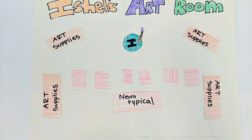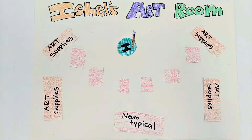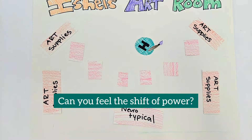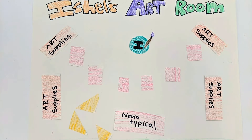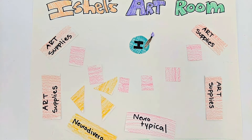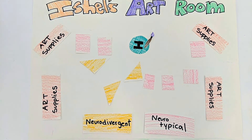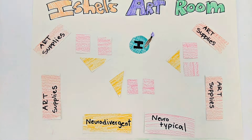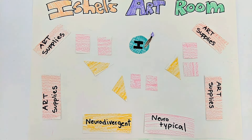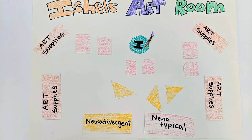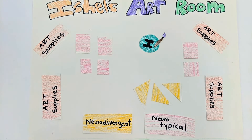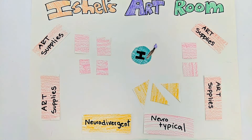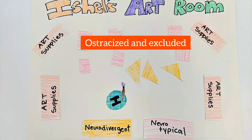Now look at what happens to the power as we shift things around. So far we've looked at neurotypical students. Now let's see what happens when we add in some neurodivergent students. If I separate and cluster the neurodivergent students together, they may feel ostracized or excluded.